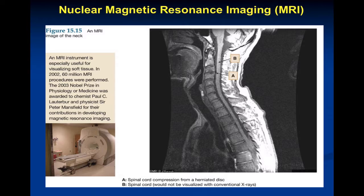Hydrogens in different tissues give different frequencies in the MRI image, and that's how they build a picture. The MRI gives you a pretty picture — this is a spinal cord MRI showing a lot of detail. This was such an important development that it was awarded a Nobel Prize, going to a physicist for helping develop this technique. So physics is important in medicine — it's not just there to torture you.